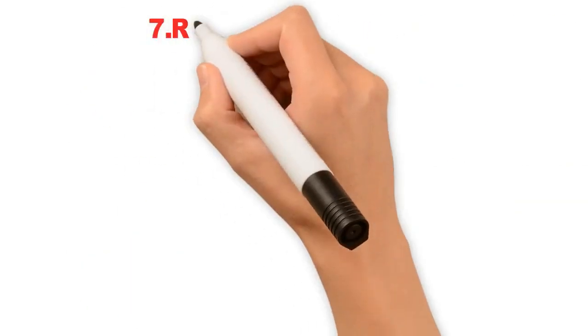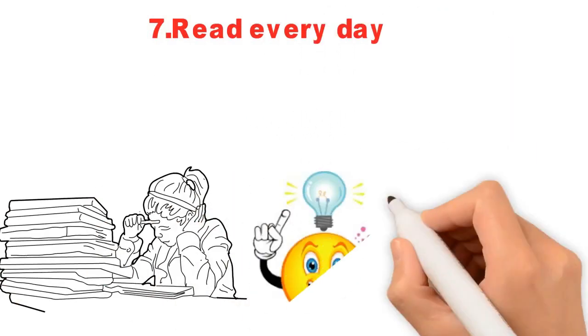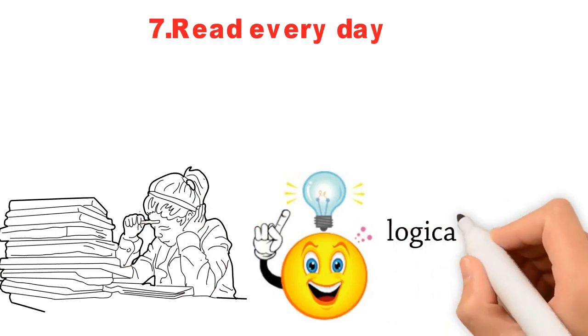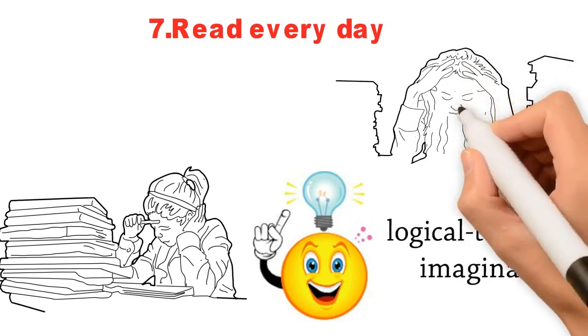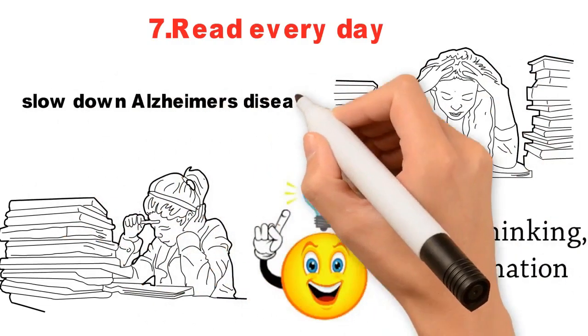7. Read every day. Reading should become an unconditional habit because it improves your memory, logical thinking, and imagination. It was proven that regular reading can slow down Alzheimer's disease and dementia.